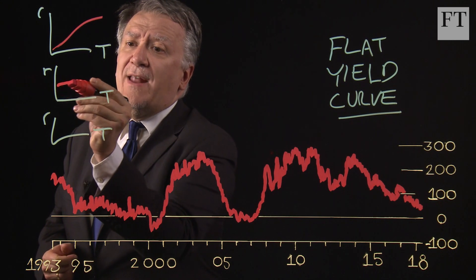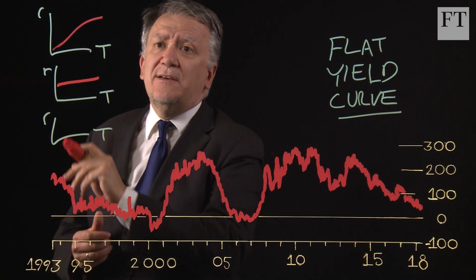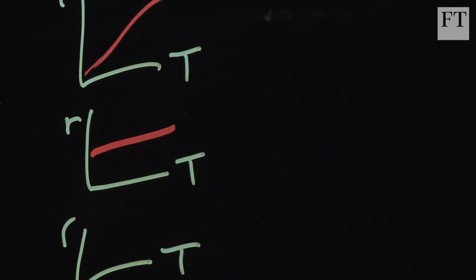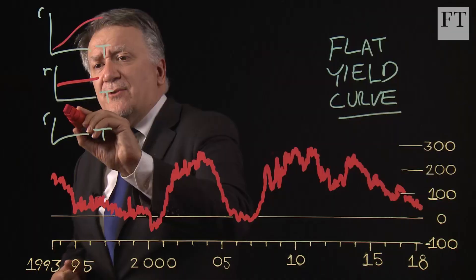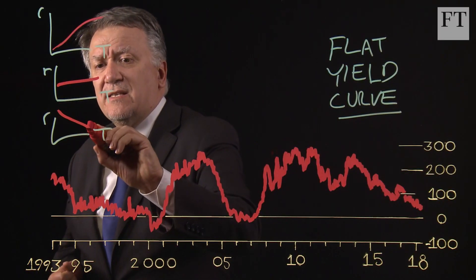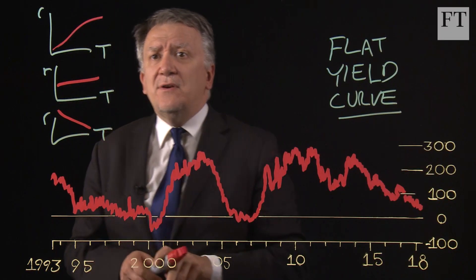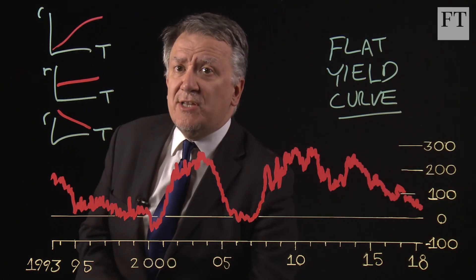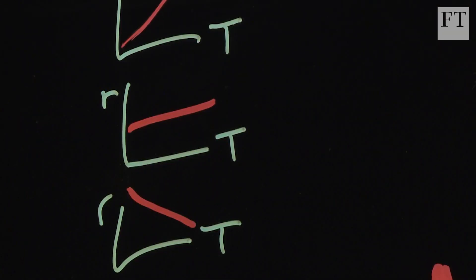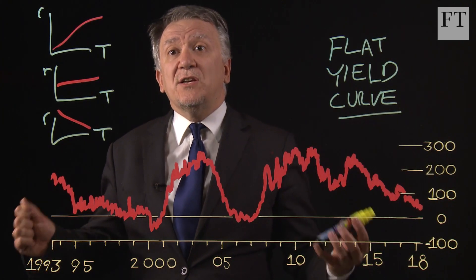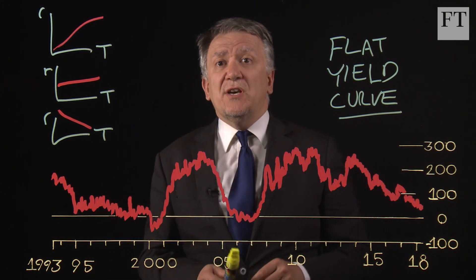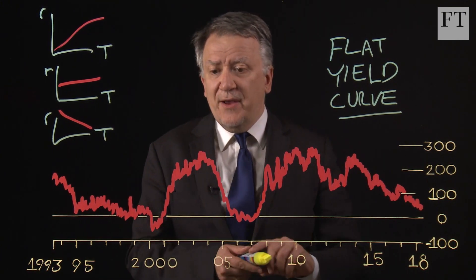Occasionally, however, you have more of a flat yield curve, which is what we have now, when there is very little differentiation in rates over time. And every so often you have the dreaded inverted yield curve, when near-term rates are actually higher than long-term rates, implying that people think the economy is going to slow down in future and rates are going to have to come down.